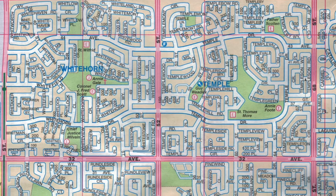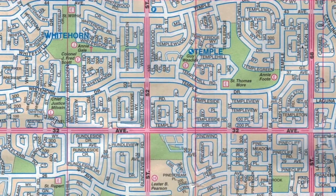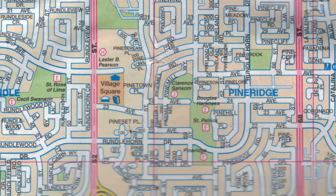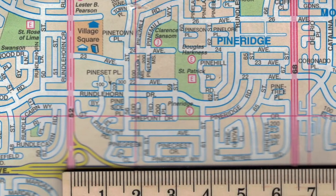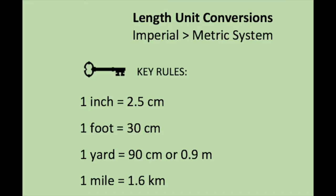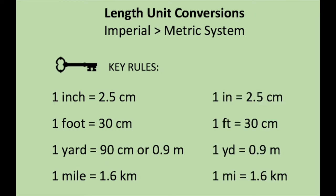Finally, one more key rule. One mile is how many kilometers. We looked at this in the exploration questions, and so you discovered already that one mile is approximately 1.6 kilometers. So that is the last rule you have to know for this section. To review the rules: one mile is 1.6 kilometers, one yard is 0.9 meters, one foot is 30 centimeters, and one inch is 2.5 centimeters.